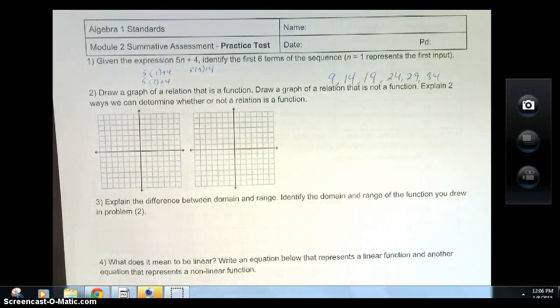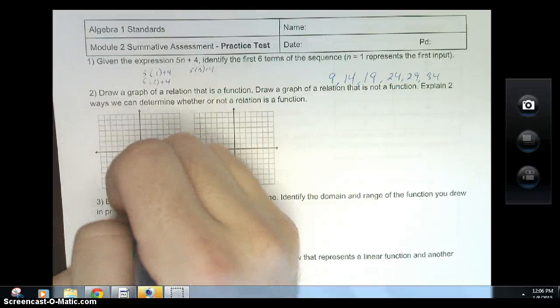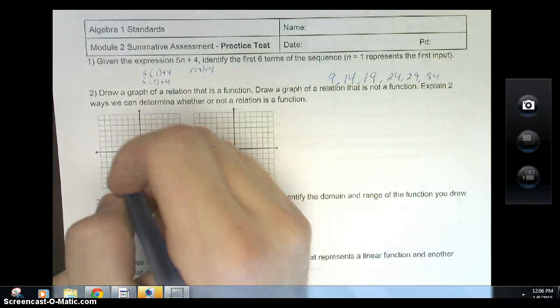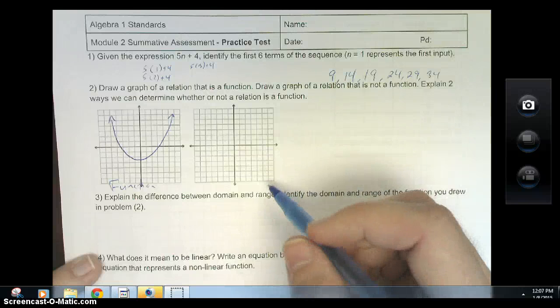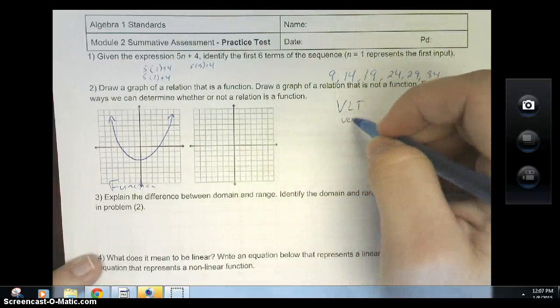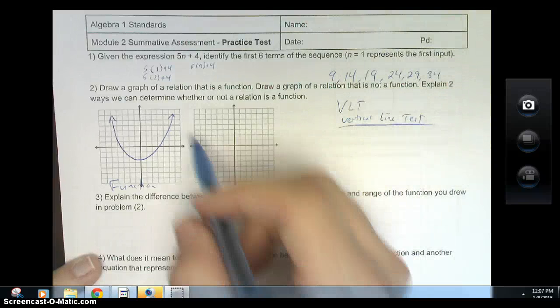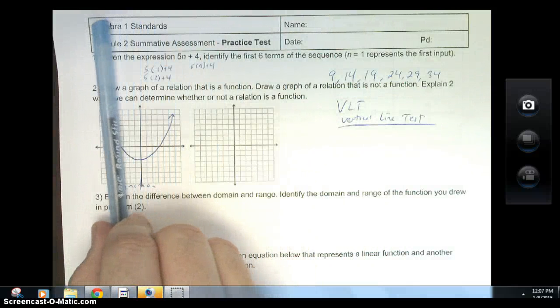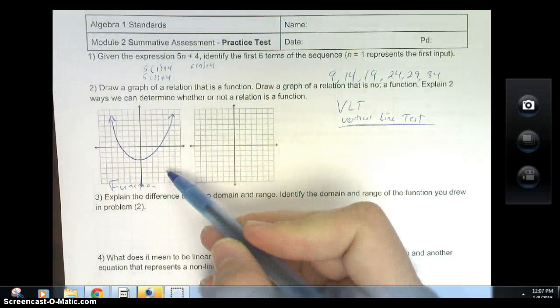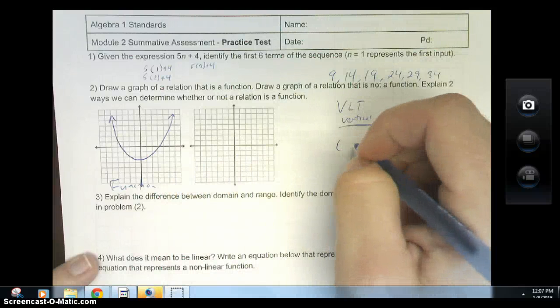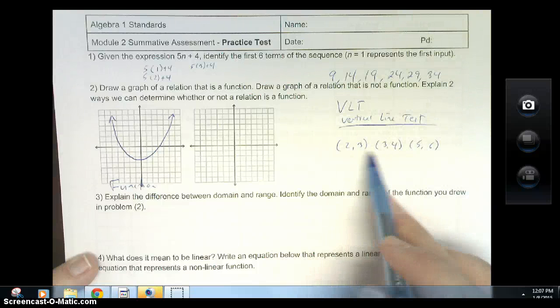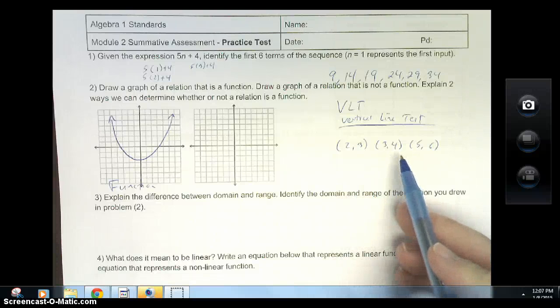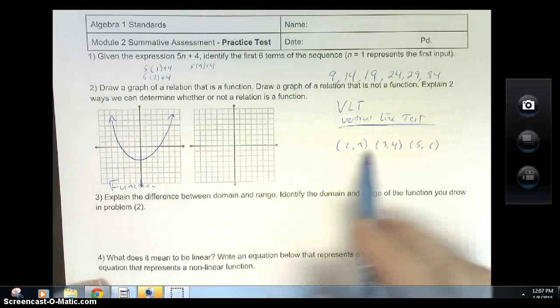Number 2, draw a graph of a relation that is a function. Draw a graph of a relation that is not a function. Explain two ways we can determine whether or not a relation is a function. Here's one that is a function. I'll do a parabola for you. Your number one go-to thing here is VLT, vertical line test. Take your pen straight up and down. You'll notice it never hits more than one time. It passes the vertical line test, hence it is a function. You've also seen examples like this, where I have points like 2,3, 3,4, 5,6. Because the x value does not repeat, it is definitely a function as well. That's your one-to-one initiative.